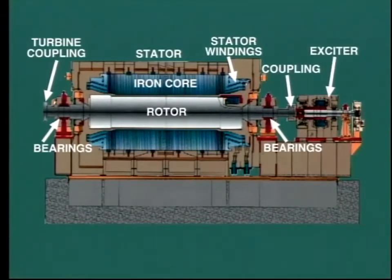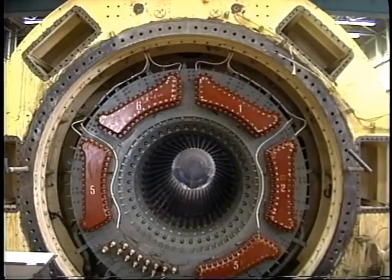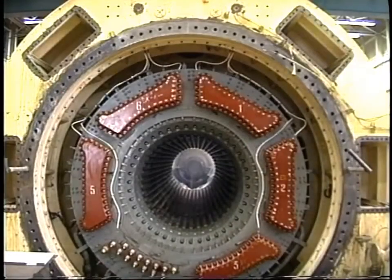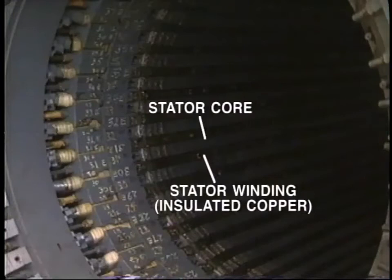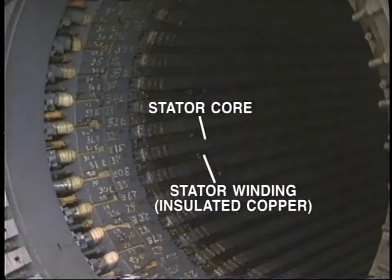The stator is anchored firmly to the concrete bed. The electricity is actually produced in the stator winding, which is the stationary winding supported by the stator frame. The stator winding consists of insulated copper conductors which are embedded in the slots of the stator core.